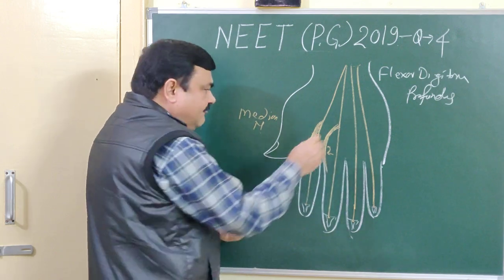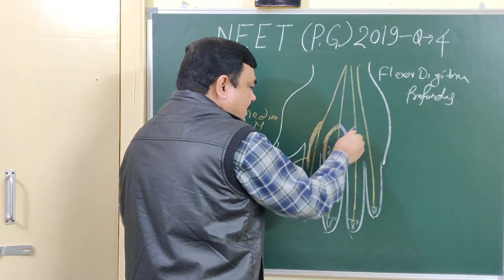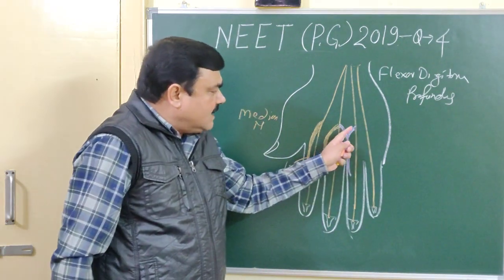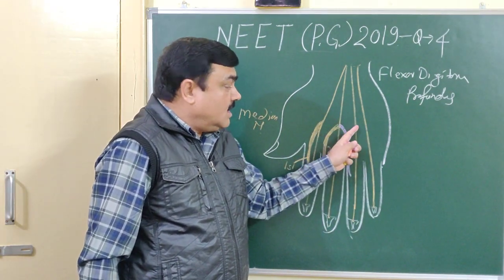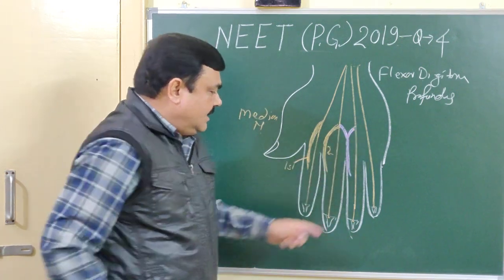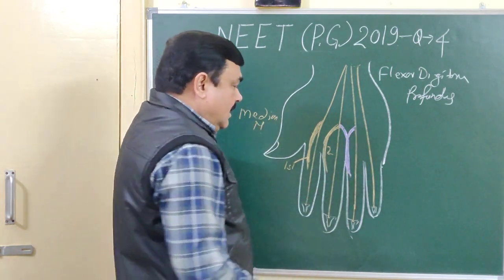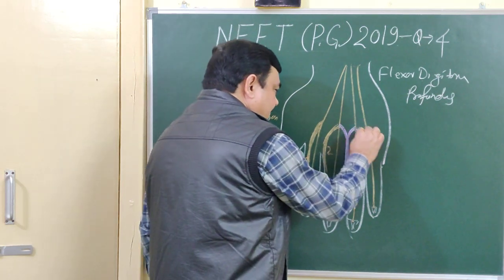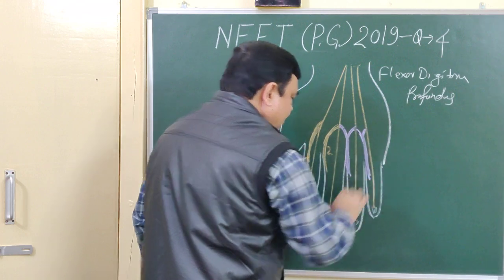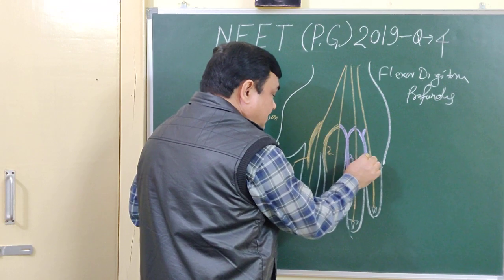The third and fourth lumbricals — here you can see the third, which arises from the adjacent side of the second and third tendon of the flexor digitorum profundus, and is inserted on the dorsal digital expansion of the ring finger. This is the third lumbrical, and this is the fourth lumbrical.